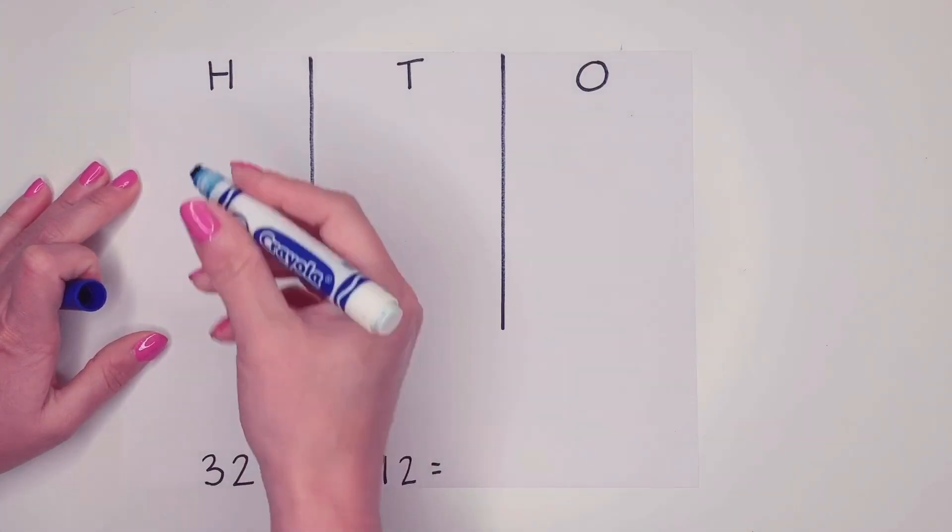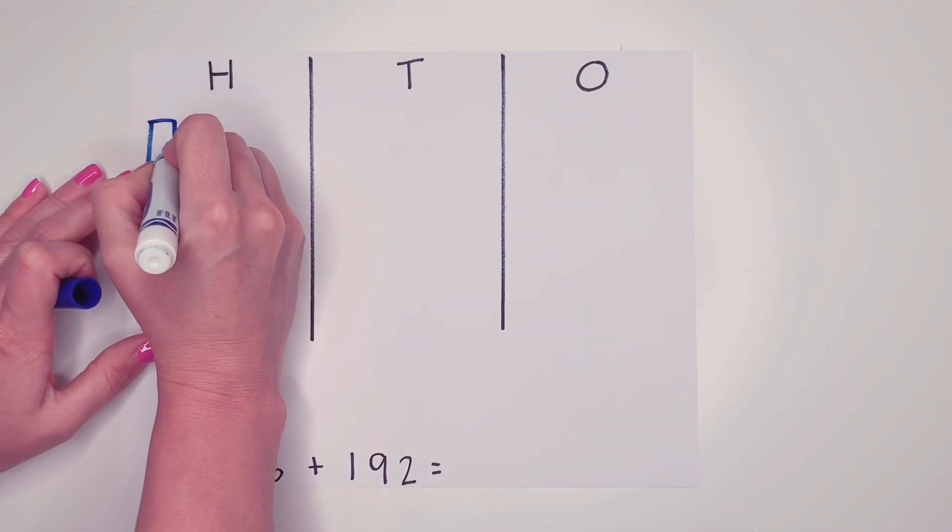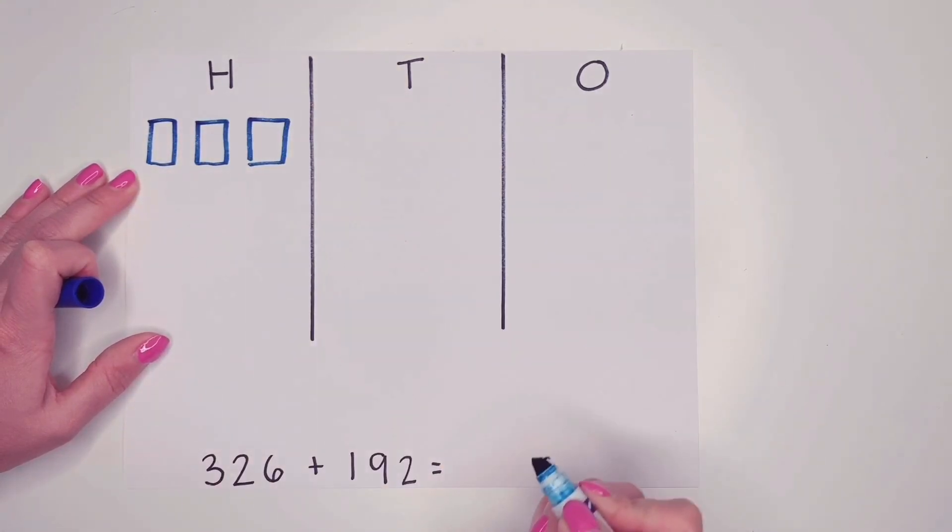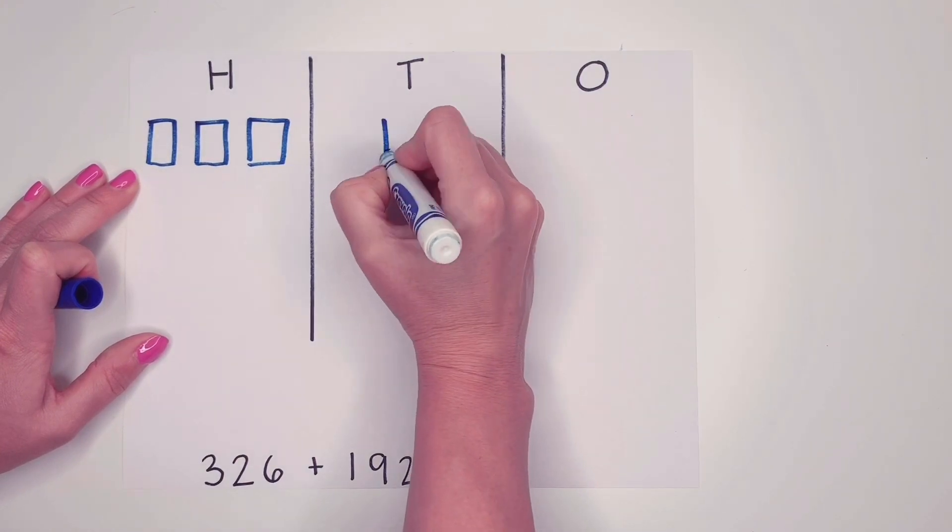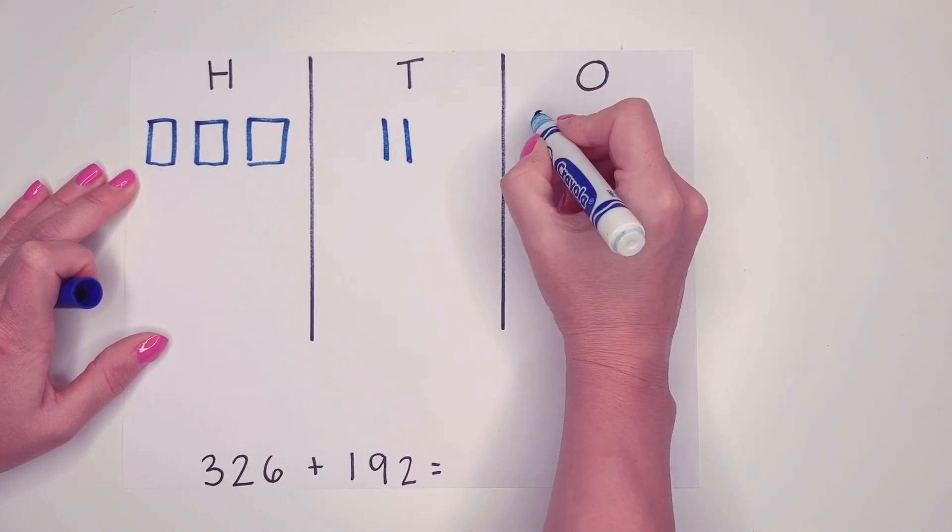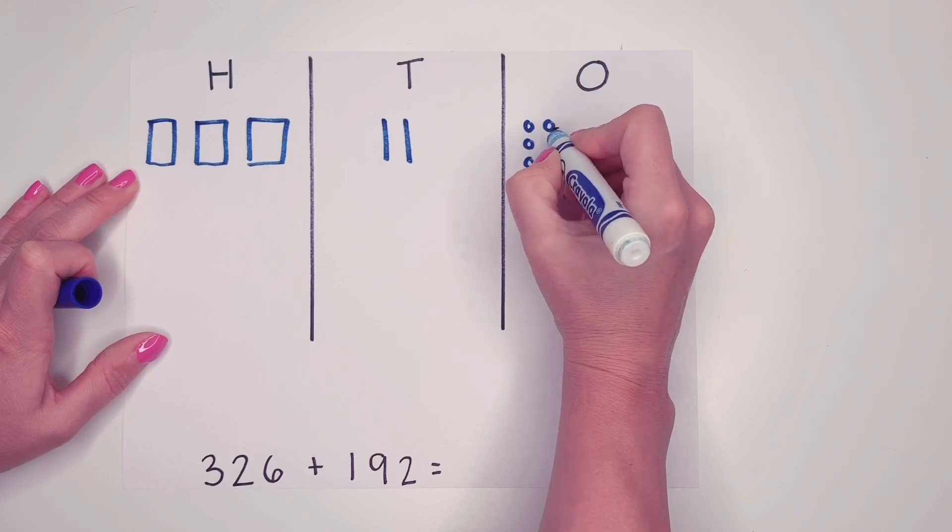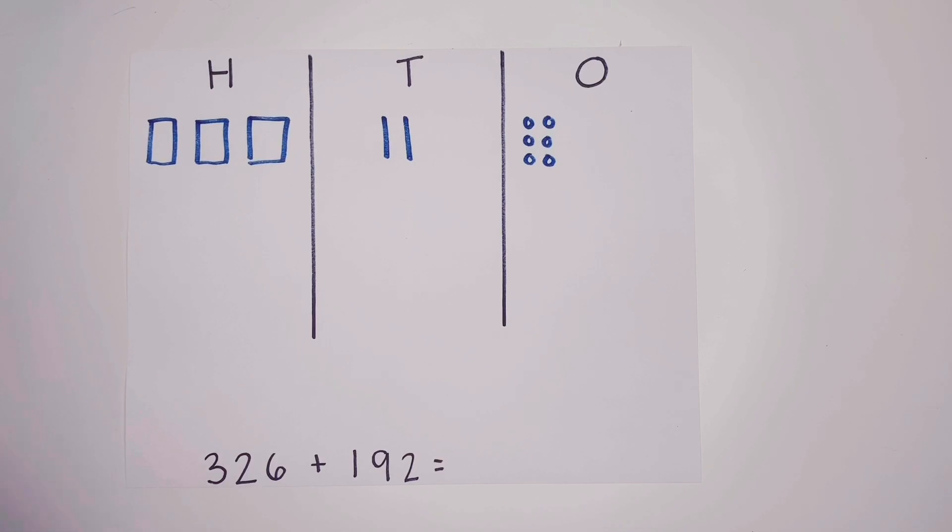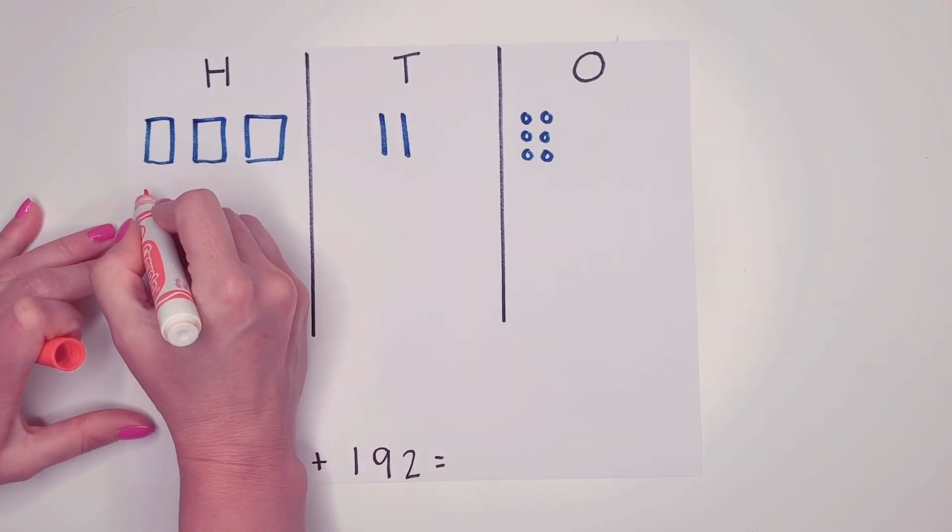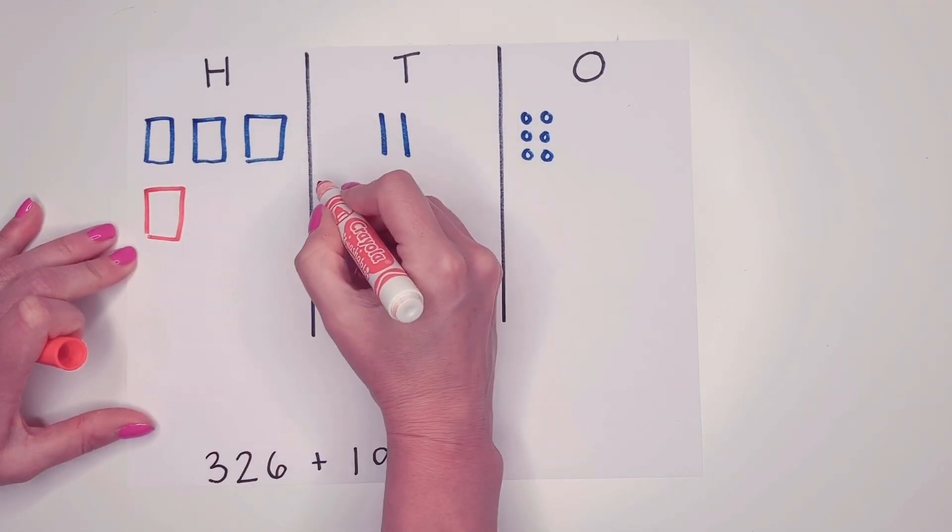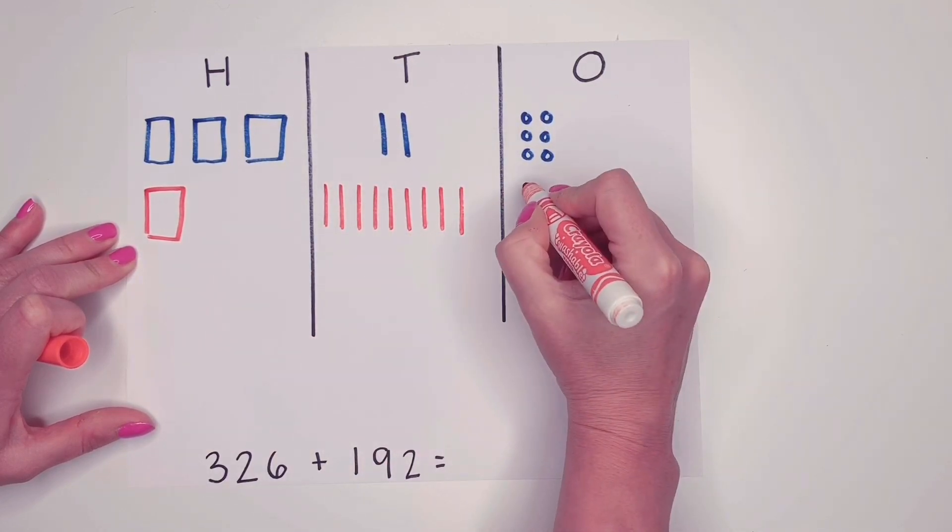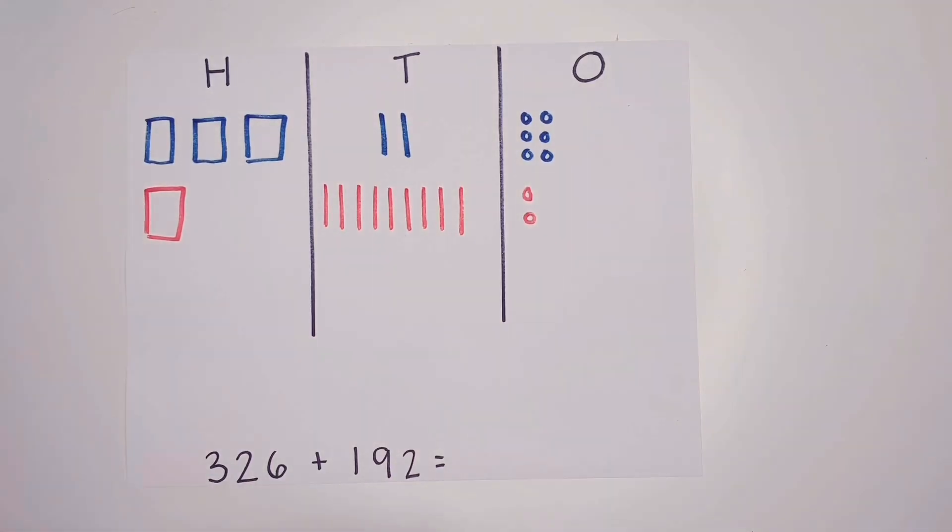So I'm going to start with blue again. So I'm going to start with three hundred twenty six. So there's three hundreds, twenty, and six. And now I'm going to do one hundred ninety two. Okay, now I'm ready to do my adding.